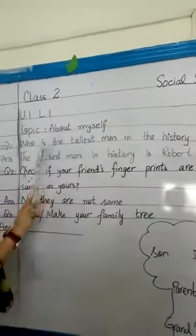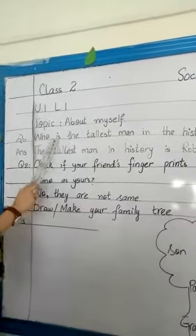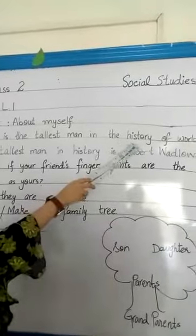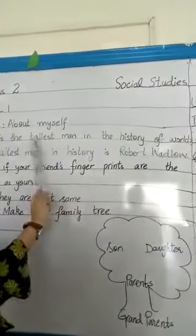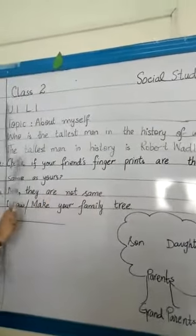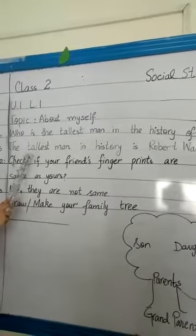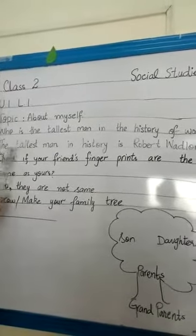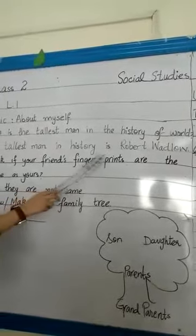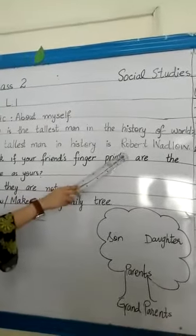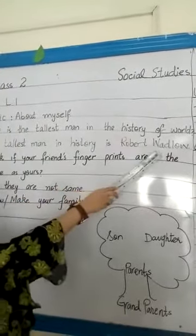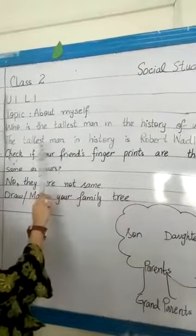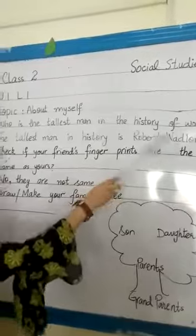Myself — apne baray mein jaanna. Question number 1: who is the tallest man in the history of the world? Duniya ki tarikh ka sab se lamba aadmi kon tha? Answer: the tallest man in history is Robert Wadlow. History ka sab se lamba aadmi Robert Wadlow tha.